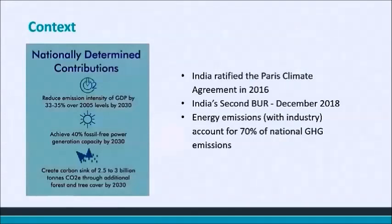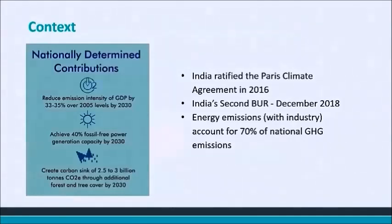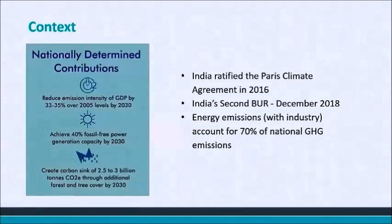To provide broader context to our GHG emissions and national goals to reduce them: India ratified the Paris Agreement in 2016. In our nationally determined contribution, or NDC, to the UNFCCC, we volunteered to reduce our emissions intensity of GDP by 33% to 35% over 2005 levels, achieve 40% fossil-free power generation capacity, and create a carbon sink of 2.5 to 3 billion tons of CO2 equivalent by 2030. At present, our energy sector emissions account for more than 70% of overall emissions, and we are one of the top five highest GHG emitters in the world.